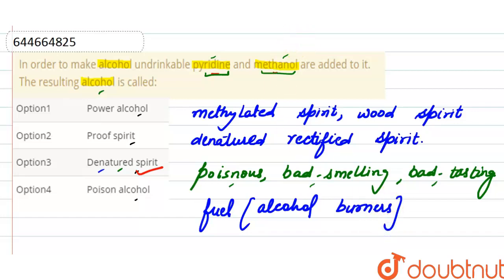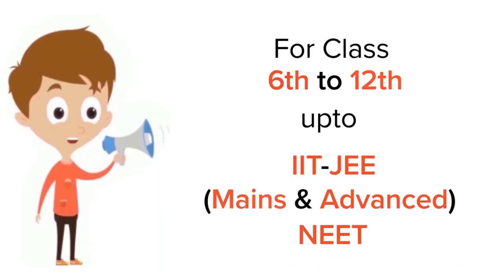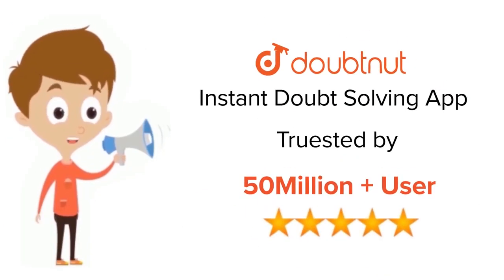So here the correct option is option third, that denatured spirit is formed after adding pyridine and methanol to an alcohol. For class 6 to 12, IIT-JEE and NEET level, trusted by more than 5 crore students, download Doubtnut.